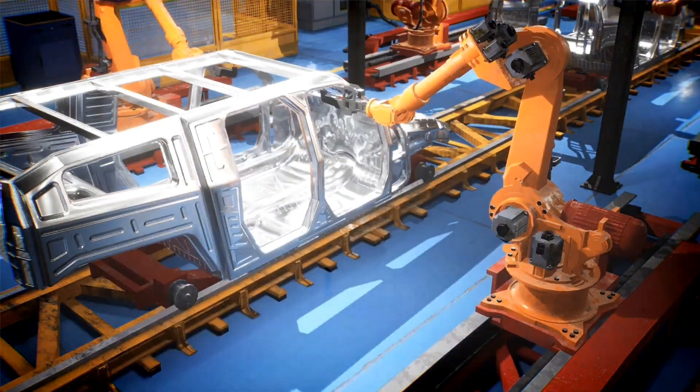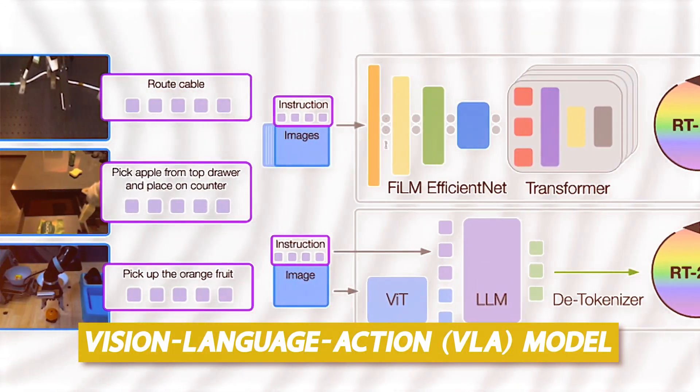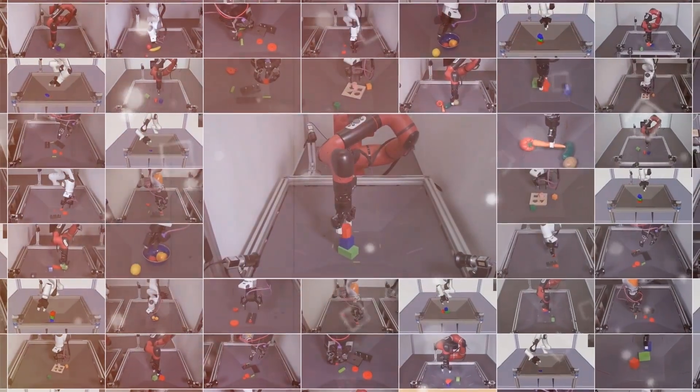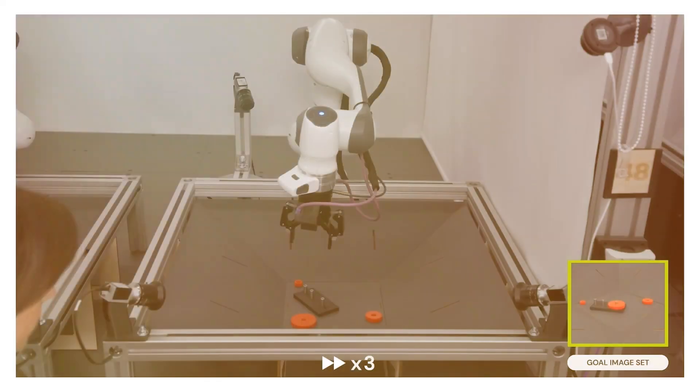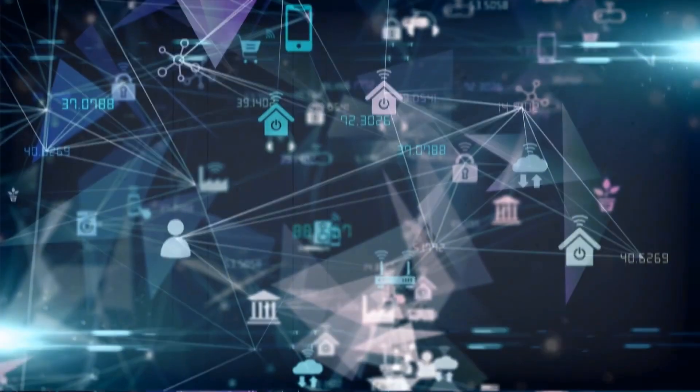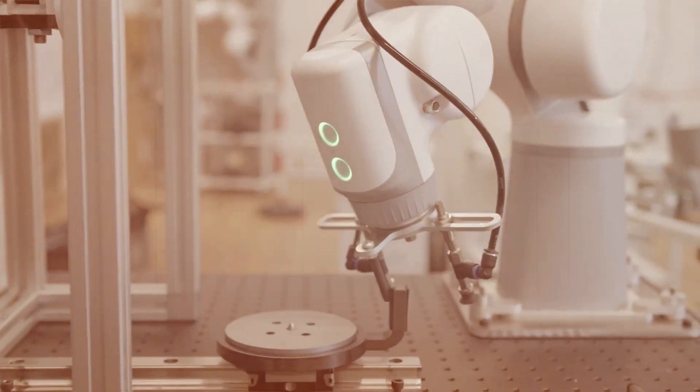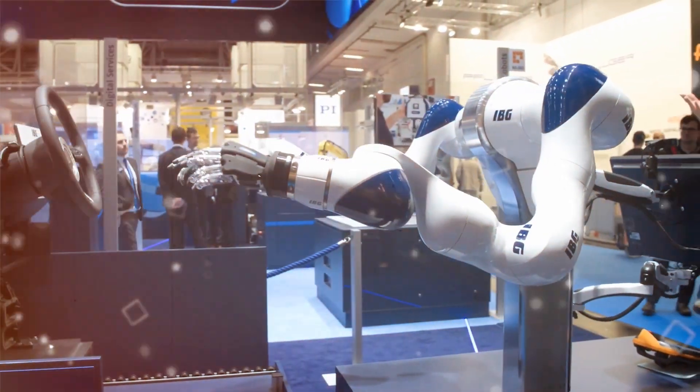Robotic Transformer X is a revolutionary vision-language action model that learns from both web and robotics data and integrates this information into generalized robotic control instructions. To acquire a comparable level of skill, robots would need to collect robot data from every object, environment, task, and circumstance. What do you think about Google's RTX?